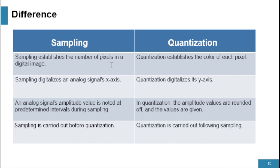The difference between sampling and quantization: sampling establishes the number of pixels in a digital image, while quantization establishes the color of each pixel. Sampling digitalizes the analog signal on the x-axis, while quantization digitalizes color on the y-axis. An analog signal's amplitude value is noted at predetermined intervals during sampling, while in quantization the amplitude values are rounded off and values are assigned. Sampling is carried out before quantization, and quantization is carried out following sampling.